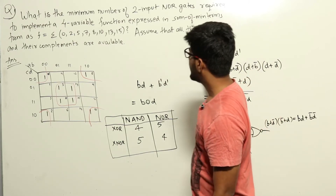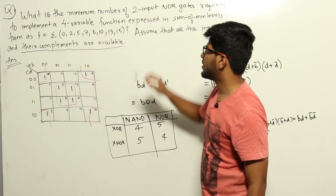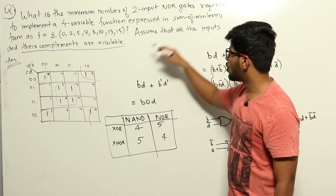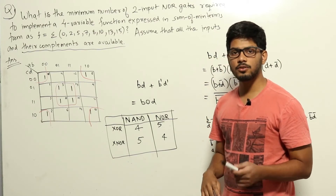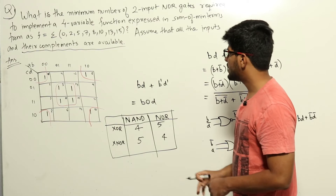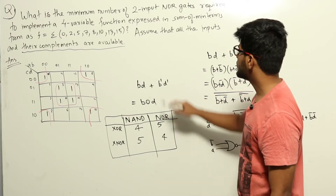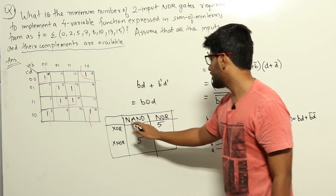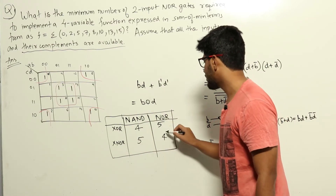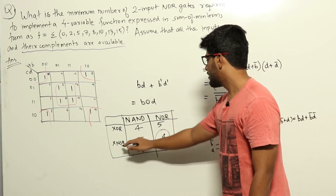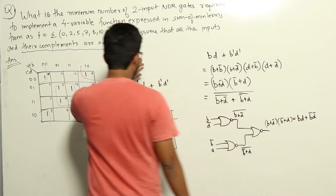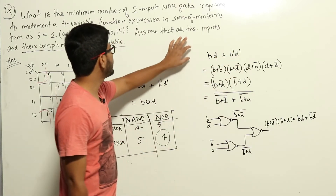However, the question states that inputs and their complements are available — meaning A, B, C, D and A', B', C', D' are all available. So we need to check if there is a better way to realize this function. Normally, XNOR realization using NOR gates takes 4 gates, but since complements are available, let us see if we can reduce further.